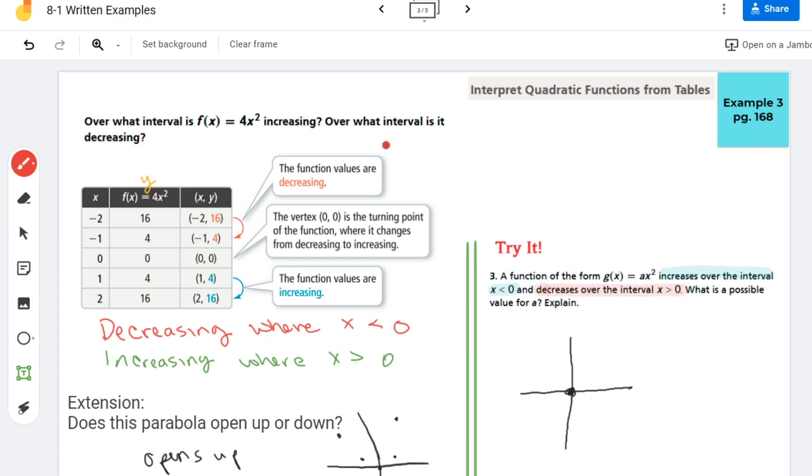So if I were to color the graph to kind of match the interval where x is less than 0 is this blue side of our coordinate plane. And the part where it's decreasing is this red part. This is where x is greater than 0.